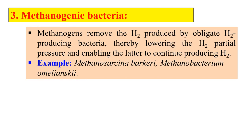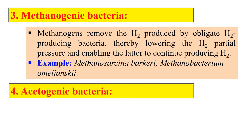The third group is methanogenic bacteria. This group converts acetate and carbon dioxide plus hydrogen into methane. These methanogens remove hydrogen produced by the obligate hydrogen producing bacteria, lowering the partial pressure of hydrogen and enabling continued hydrogen production. Examples include Methanosarcina barceri and Methanobacterium omelianskii.